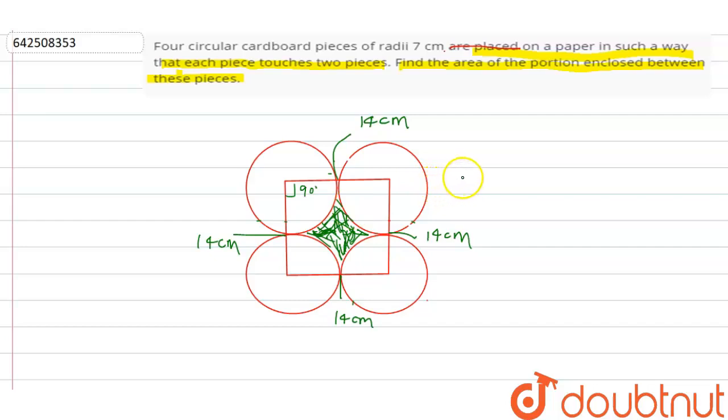So if you find the enclosed area, enclosed area is equal to, we can give it as area of area of a square